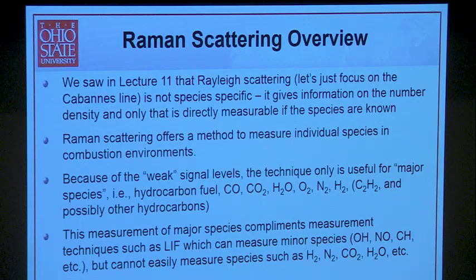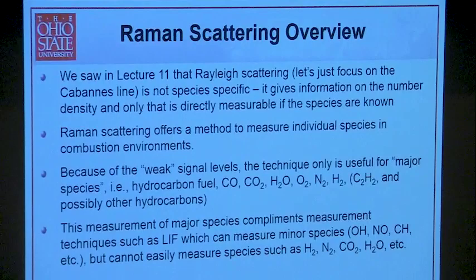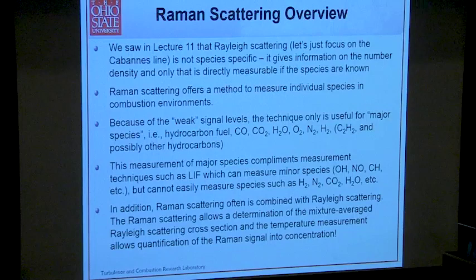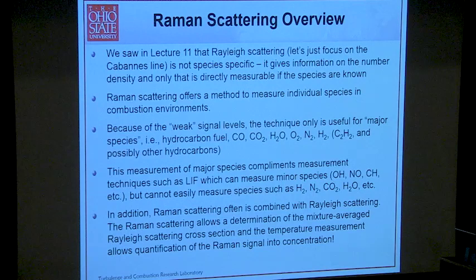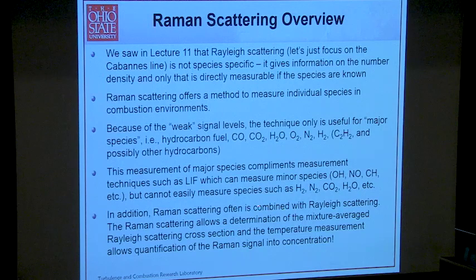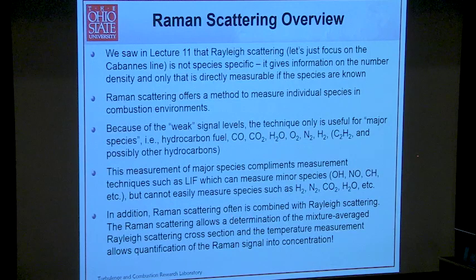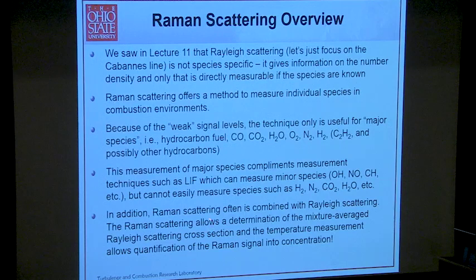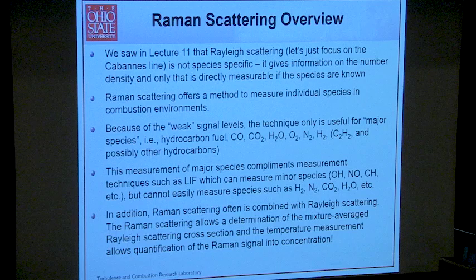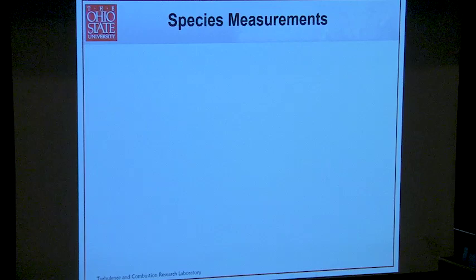Raman scattering is a nice complementary measurement to LIF, where you can measure minor species — you don't really get access to major species with LIF. Often, vibrational or ro-vibrational Raman scattering is combined with Rayleigh scattering. In an iterative process, the Raman scattering gives you species, the species correct the mixture-average cross-section, which gives accurate temperature, and the temperature quantifies the Raman. So with simultaneous Rayleigh-Raman, you can get all major species and temperature quite nicely.